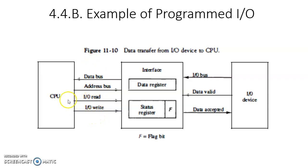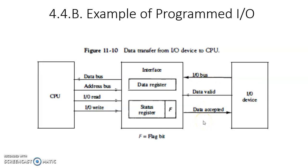IO read means the CPU will be receiving data from the IO device. IO write means the CPU will be sending data to the IO device. Looking at the connections: IO bus, data valid, data accepted. In the previous topic we discussed asynchronous data transfer — two types were discussed: strobe controlled and handshake. Handshake is the more efficient and secure way. In strobe control, the source and destination use only two control lines, whereas in the handshake method it uses three control lines.